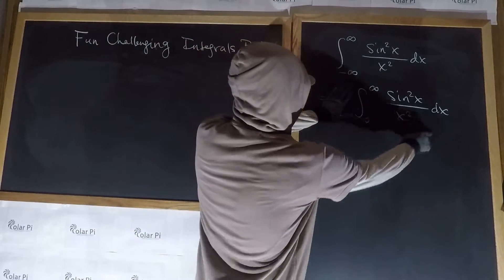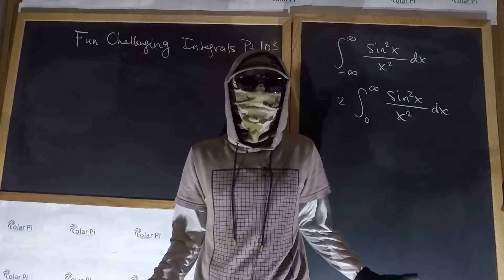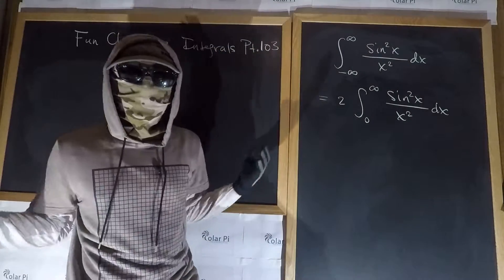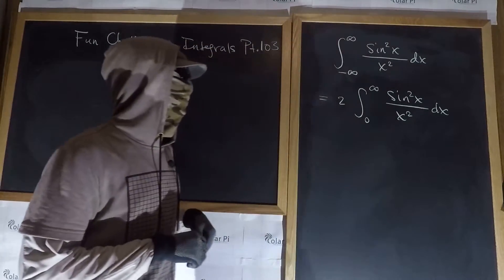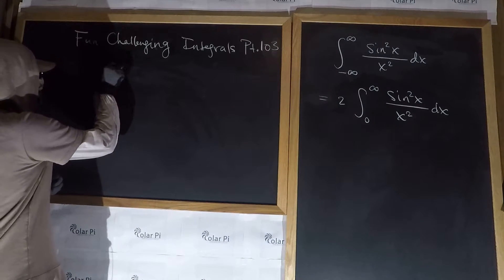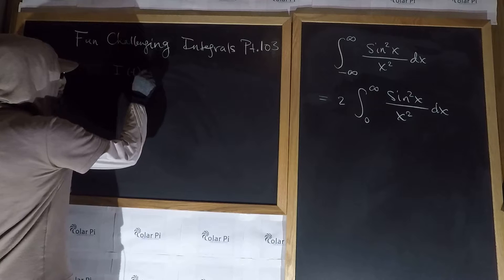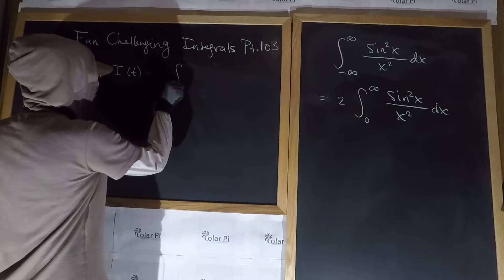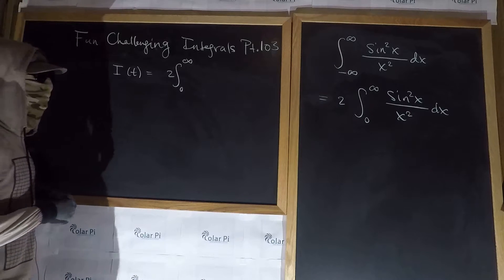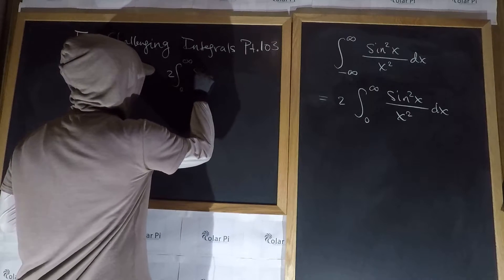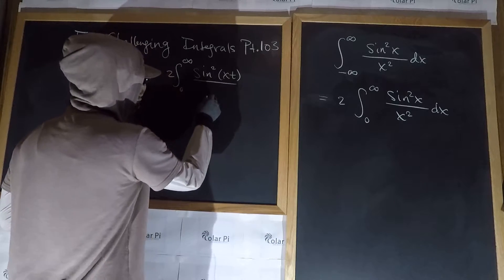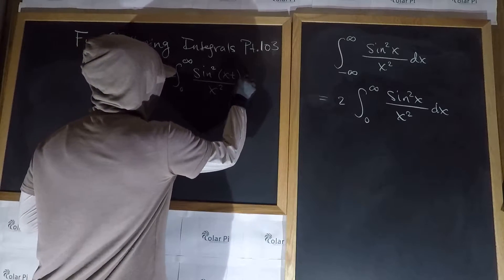Without this factor of 2, I already showed you how to solve this integral in a different video using a really cool, clever method. But here, as I said, we're going to use Laplace transforms. To start, let's define i of t to be the integral from 0 to infinity — and let's write the 2 there also — of sine squared of xt divided by x squared, dx.